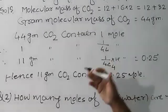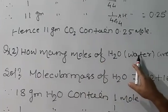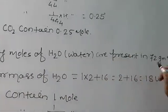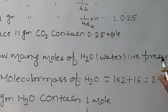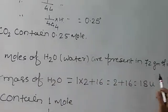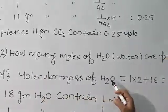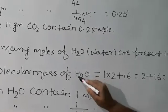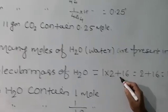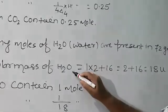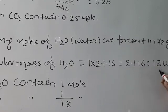Now a similar question: how many moles of H2O (water) are present in 72 grams of it? Let us see how to solve it. The molecular mass of H2O equals: hydrogen has atomic mass 1, so 1 into 2 plus 16 (the atomic mass of oxygen), giving 2 plus 16, that is 18 U.